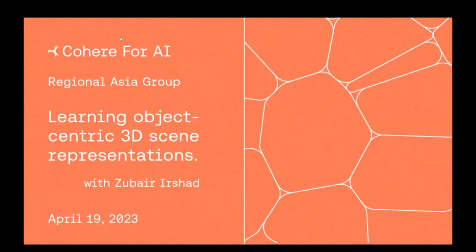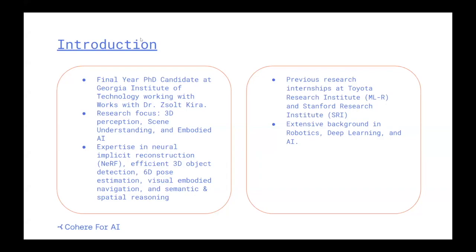Hi everyone, I hope you all are doing well. My name is Eben Phanis and I am the lead for Geo Reading Asia Group at Tuber for AI. Today is our first guest session by a very special guest. Tuber is a final year PhD candidate at Georgia School of Technology, working with Dr. Zoll. His research focus includes 3D perception, scene understanding, and embodied AI. He has great expertise in resource-efficient 3D object detection, 6D pose estimation, semantic and spatial reasoning. He has worked with the Toyota Research Institute in machine learning and robotics department as well as Stanford Research Institute. He has a great background in robotics, deep learning, and AI. Today's session will be on learning 3D representations. So without wasting any time, I'll invite Zubayr to start the session.